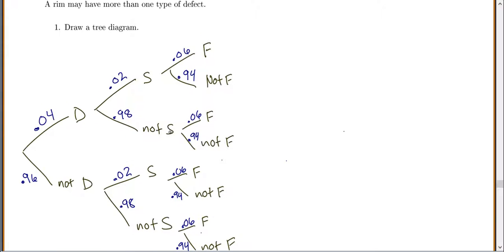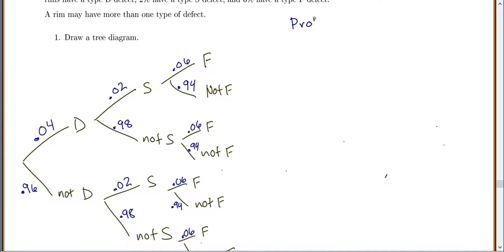Now, after you've done all of these, these are usually our conditional probabilities. In this case they're independent, so you don't have to worry about conditional probabilities. But if you multiply along the branches, you always get the probability of intersection. At the end, we'll find the probability of each intersection by multiplying. Along this first branch, the probability of D and S and F is 0.04 times 0.02 times 0.06, which gives 0.000048.